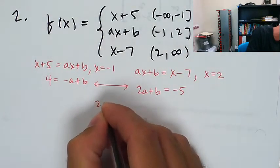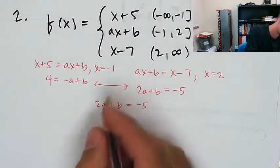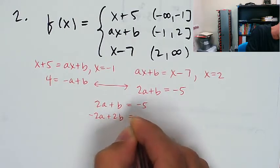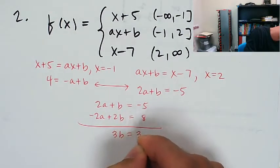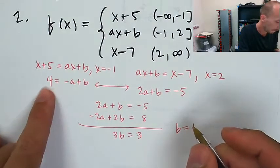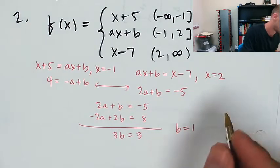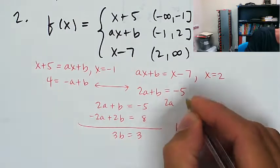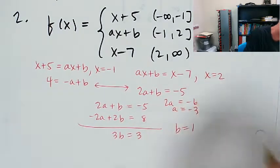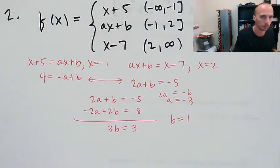I'm going to write 2a plus b equals negative 5, and then I might want to multiply this equation by 2. And so then I would have negative 2a plus 2b equals 8. Add these two equations together. I'm going to get 3b equals 3. That means to me that b is equal to 1. 2a plus 1 equals negative 5, so 2a equals negative 6. a equals negative 3. And that's how we did that one.